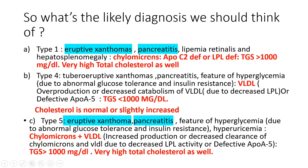Both Type 1 and Type 5 can have eruptive xanthomas and both can have pancreatitis. In Type 4, triglyceride levels will usually be under 1,000, and very importantly, the cholesterol will be almost normal or only slightly increased — not markedly elevated like in this patient. The main lipoprotein elevated in Type 1 is chylomicrons. In Type 4, it is VLDL. And Type 5 is basically a combination of Type 1 plus Type 4, so both chylomicrons and VLDL are elevated.